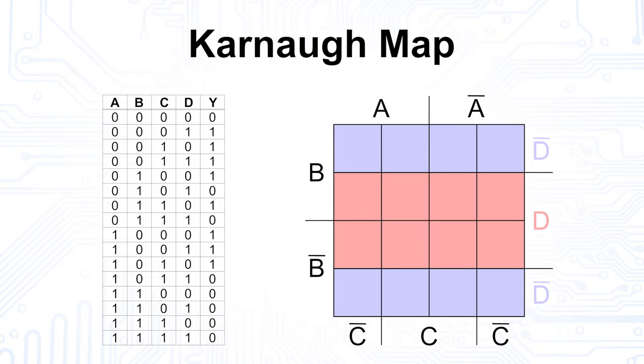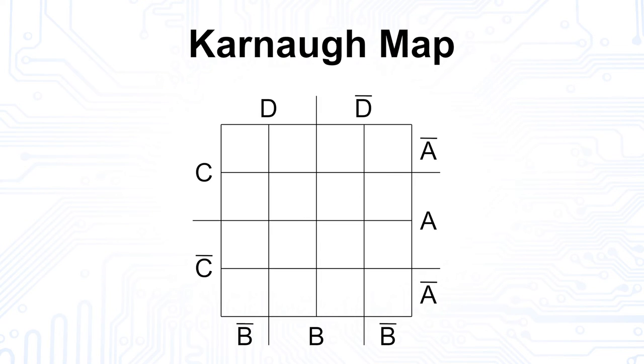Now, each field of the grid represents a single combination of input variables, which is also the only requirement for the arrangement of the input variables. So, the Karnaugh map might also look like this, for example.